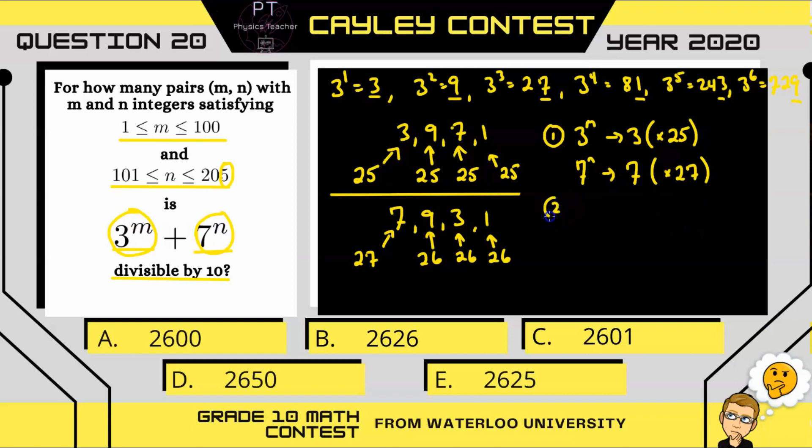All right, so another option is to have our 3 to the m option have a ones digit of 9 and our 7 to the n option to have a ones digit of 1. Those will add to 10. And so we have a total of 25 and 26 numbers for those options.